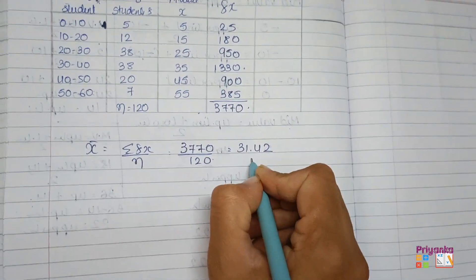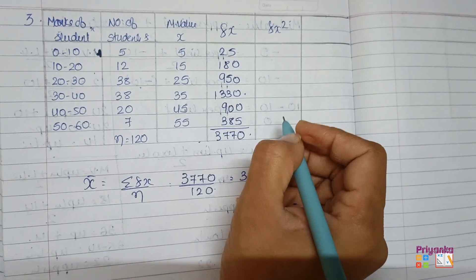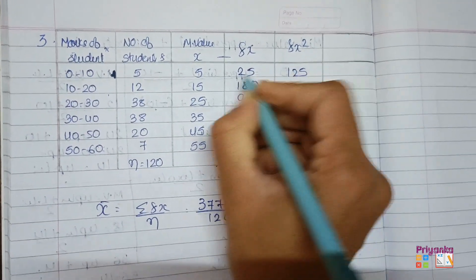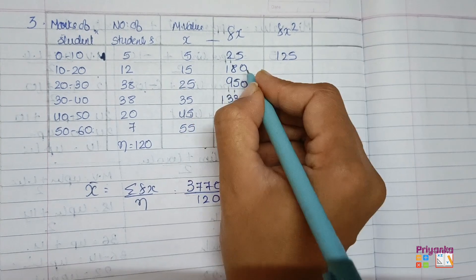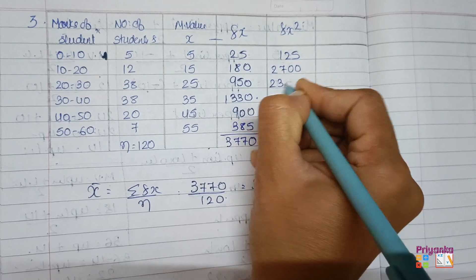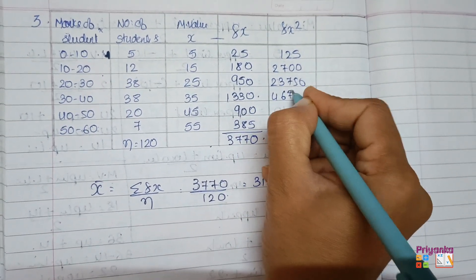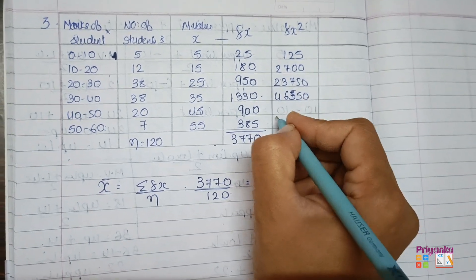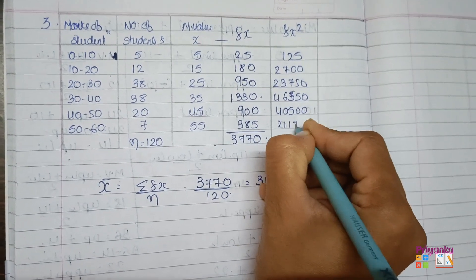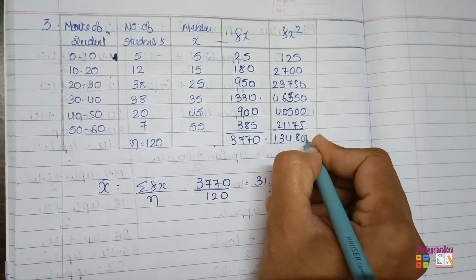Again we got the answer in decimal. So the next column what we find out is fx square for the standard deviation. Where these two columns will multiply 5 into 25, 125, 15 into 180 will be 2700. The next 23750, 46750, and so on.